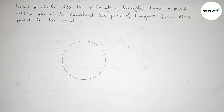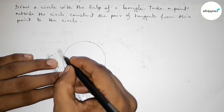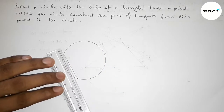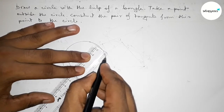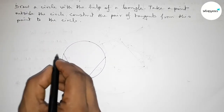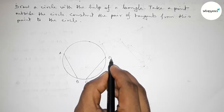Next we have to find out the center of this circle. To find the center, we first have to draw two chords of this circle. Drawing the first chord and drawing another chord here. Taking this as chord AB and this one as chord CD.